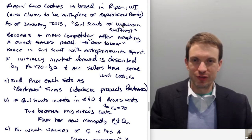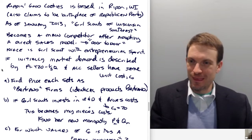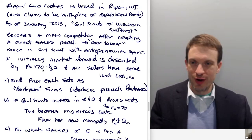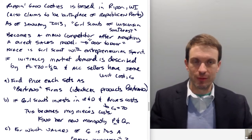As of January 2013, Girl Scouts of Wisconsin Southeast became a main competitor after adopting a direct sales door-to-door model. My niece is a Girl Scout with an entrepreneurial spirit. If initially the market demand is described by P = 420 - (1/3)Q and all sellers have the same unit cost C₀, find the price each sets as Bertrand firms, assuming identical products.